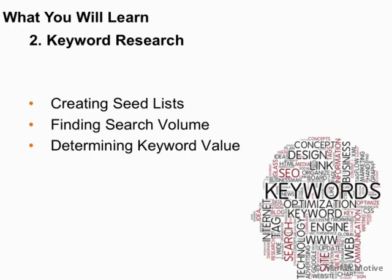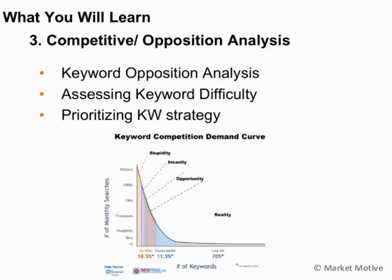We do keyword research through seed lists and explore the entire keyword universe within your niche or business. We'll determine how valuable those keywords are and which ones are most important based on what you're trying to do. Then we'll take a look at those same keywords and do some opposition analysis — run them through search results to determine how competitive they are and whether we can actually compete for them. We'll prioritize our strategies based on keyword difficulty and benefit.